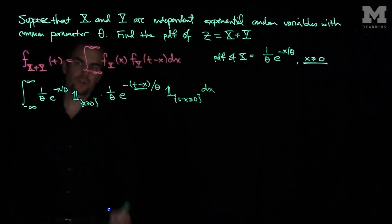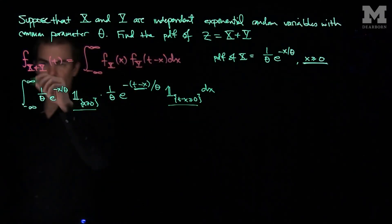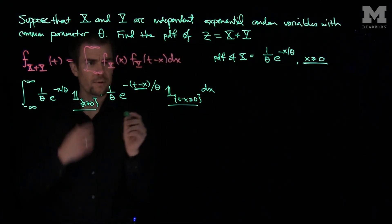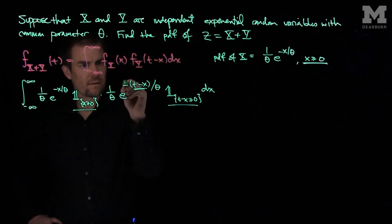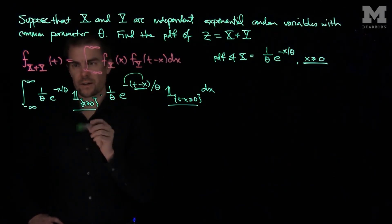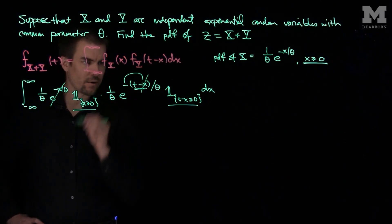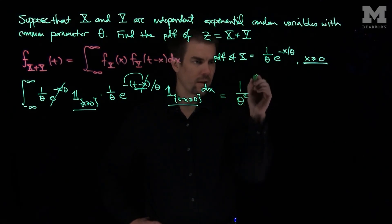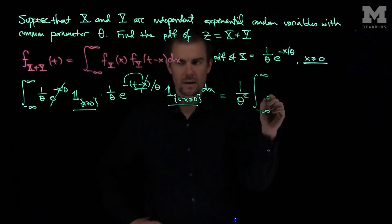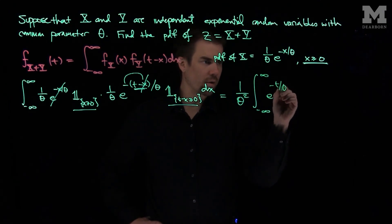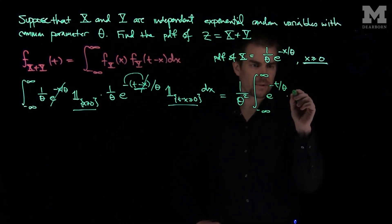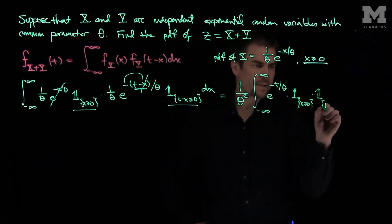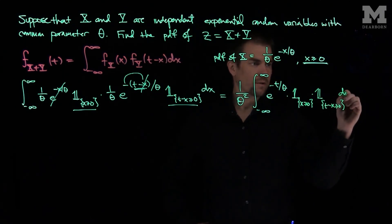Our indicator functions determine the limits of integration. Simplifying, we pull out 1/θ². We have a negative and a negative exponent combining to give a positive x/θ, so the e^(x/θ) terms cancel out. What remains is 1/θ² times the integral from negative infinity to infinity of e^(−t/θ), with the conditions that x ≥ 0 and t minus x ≥ 0, dx.